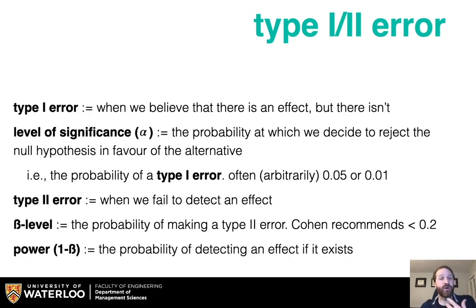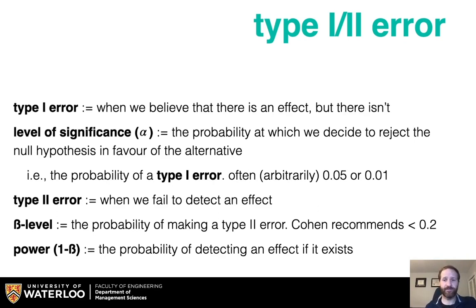One thing you've probably heard of is power, which is 1 minus beta — the probability of detecting an effect if it exists. Some of the tests we see in this class have a higher power than others, which allows us to detect that signal more easily.